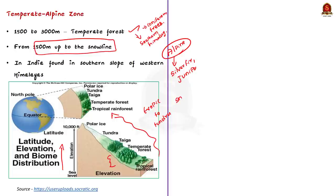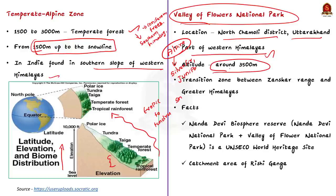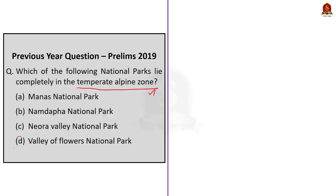In India, the temperate alpine zone is found along the western Himalayas. Among the given national parks, the Valley of Flowers National Park fits the profile of the temperate alpine zone. This national park is located in the North Chamoli district of Uttarakhand, as part of the western Himalayas at an altitude of around 3500 meters. It encompasses a unique transition zone between the mountain ranges of Zanskar and the greater Himalayas, so it sits perfectly in the temperate alpine zone. The correct answer is option D, Valley of Flowers National Park.